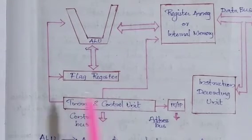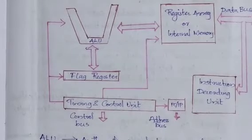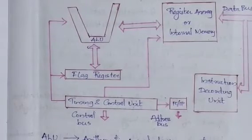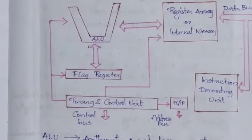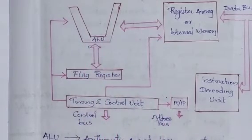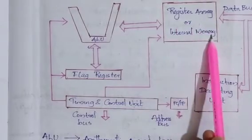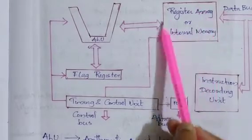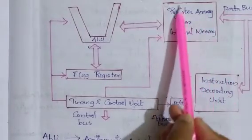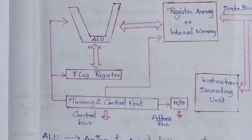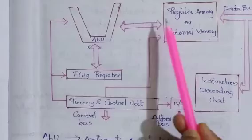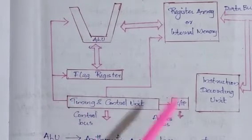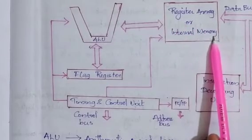There is a flag register, which stores the status bits that are set after the execution of an ALU operation. The register array, also known as internal memory, stores all the binary information needed for processing — that is, the input to the ALU, the output from the ALU, and all data needed for processing.